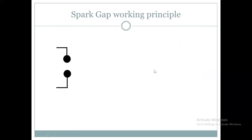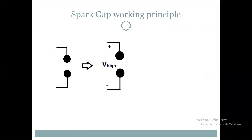So what is the working principle? If I have a spark gap and I apply high voltage to the electrodes and keep increasing the voltage — if we consider air between the electrodes — as the voltage increases, a spark will be produced regardless of other conditions.